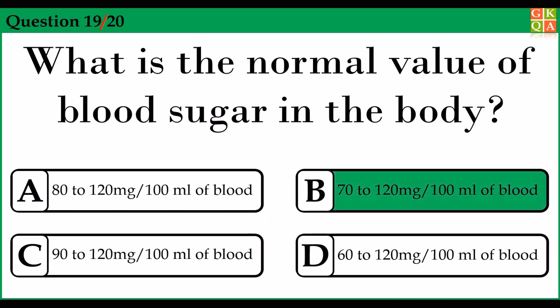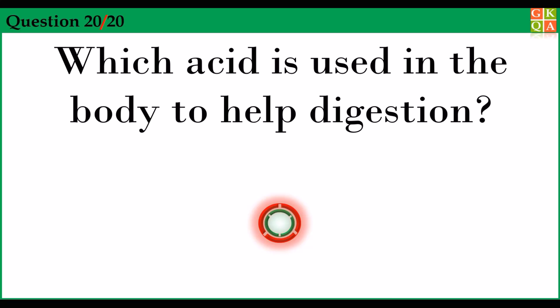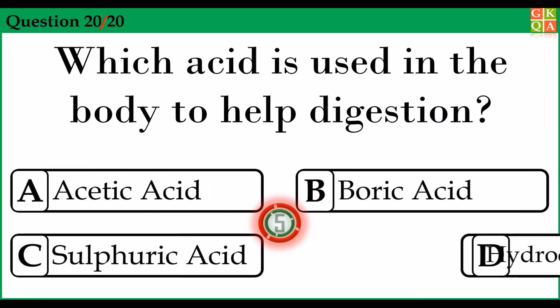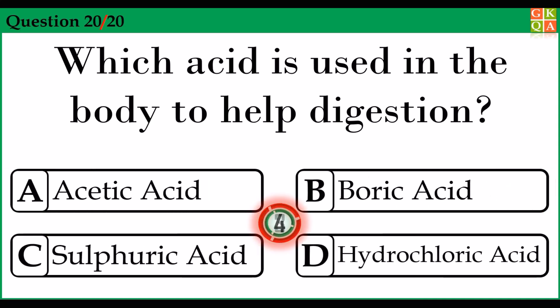Answer option B: 72 to 120 mg per 100 ml of blood. Which acid is used in the body to help digestion? Answer option D: Hydrochloric acid.